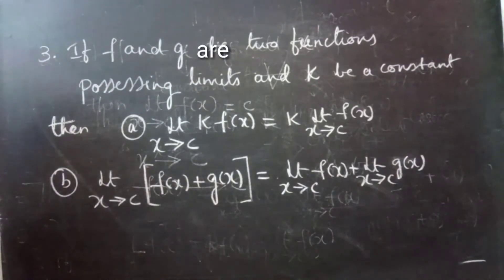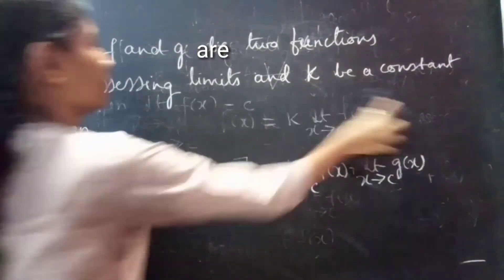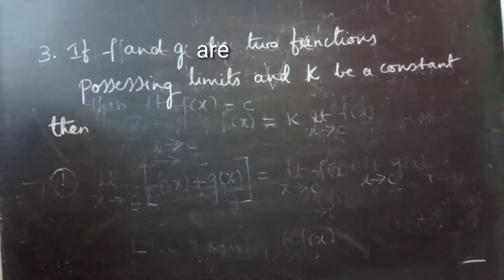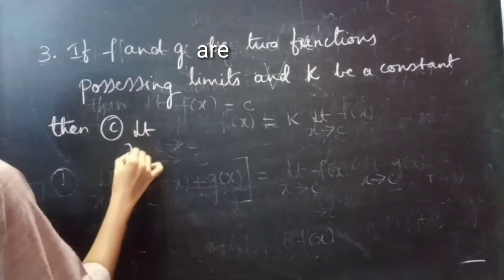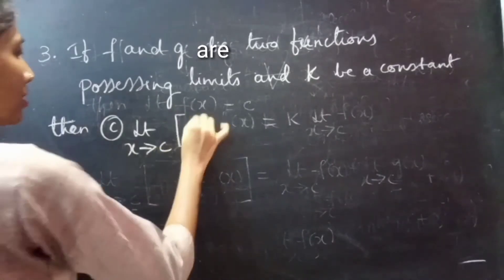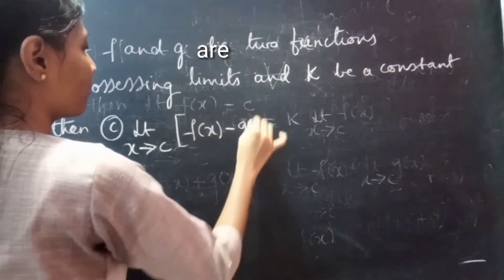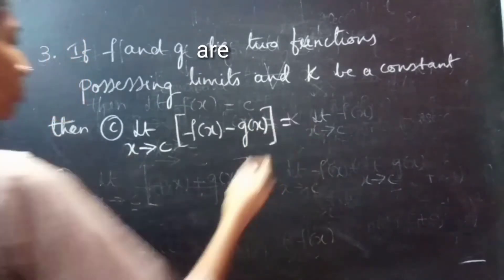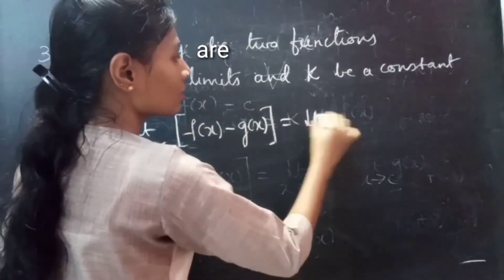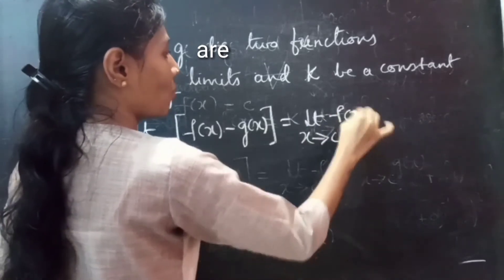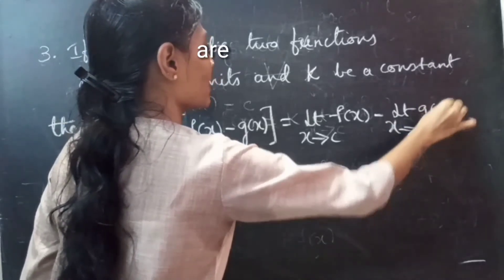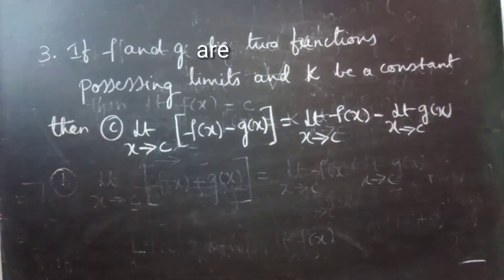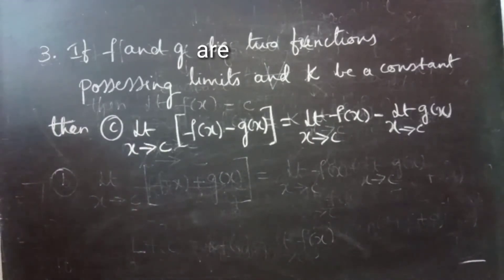Next, result c: limit x tends to c of f of x minus g of x is equals to limit x tends to c, f of x, minus limit x tends to c, g of x — since f of x and g of x are two functions which possess limits.